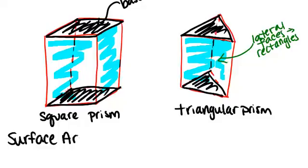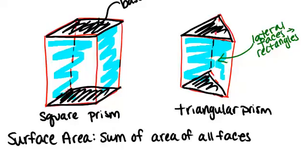Surface area would be the area of the net if you were to unfold the whole prism. In other words, it's the sum of the area of all the faces. So if you wanted to figure out the surface area of this square prism, you would need to know some of the dimensions, the lengths of the edges, in order to figure out the area of each rectangle and the area of the squares. And then you would add them all up.